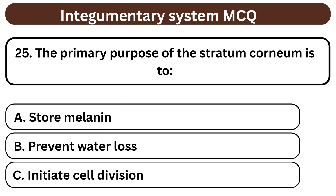Question 25. The primary purpose of the stratum corneum is to A. Store melanin. B. Prevent water loss. C. Initiate cell division. The answer is B. Prevent water loss.